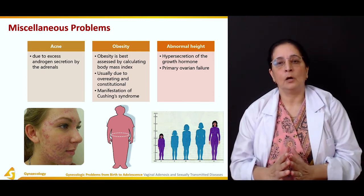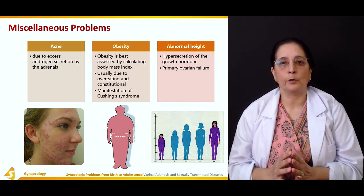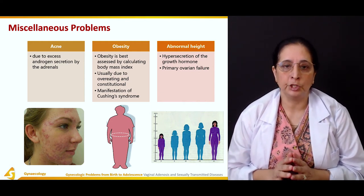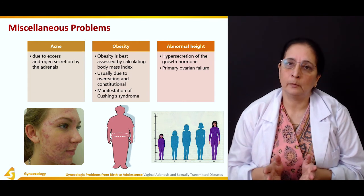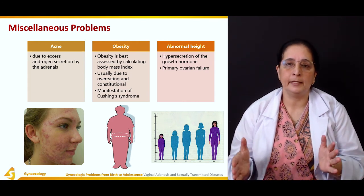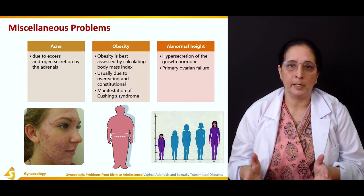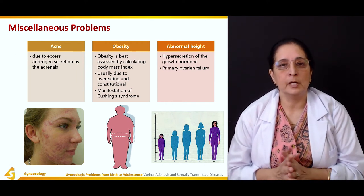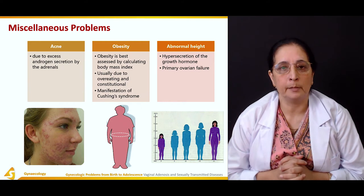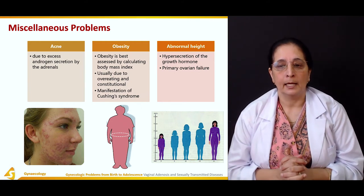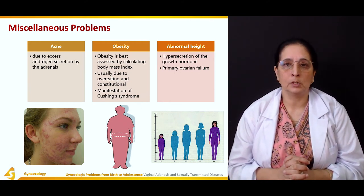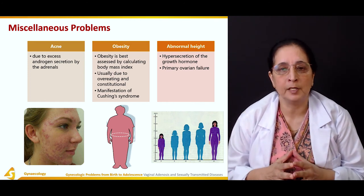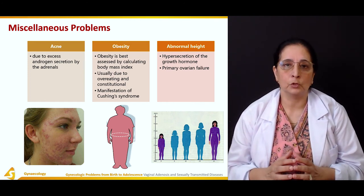So these are all different miscellaneous problems that can occur in adolescence. In the adolescent age, acne is very common — especially in the age of puberty — and it can be due to excess androgen secretion by the adrenal gland. Excessive height can be due to increased production of growth hormone from the anterior pituitary.